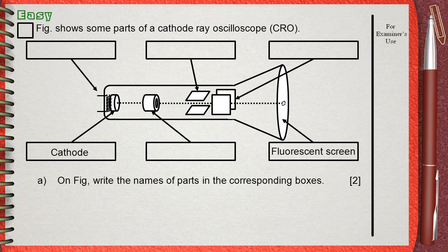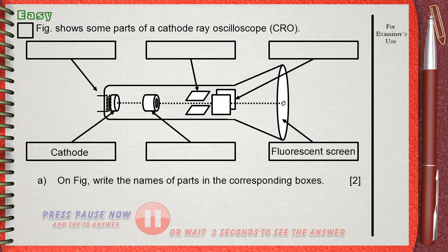Figure shows some parts of a cathode ray oscilloscope CRO. On the figure, write the names of parts in the corresponding boxes.